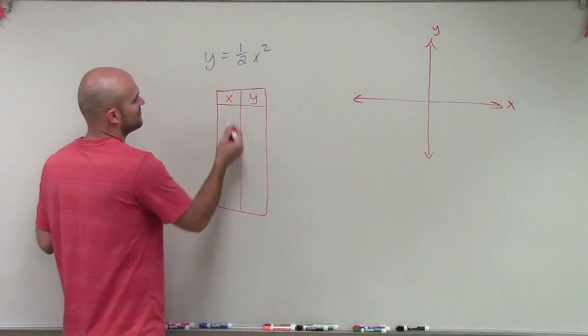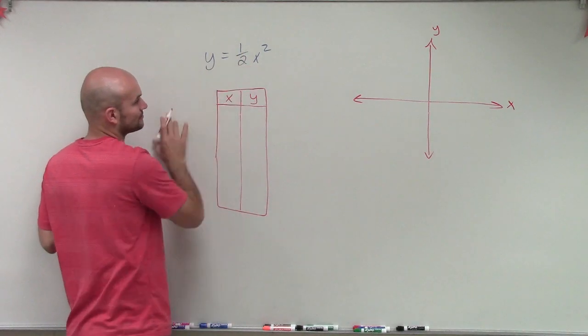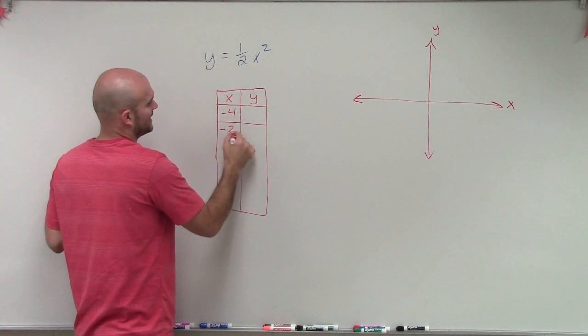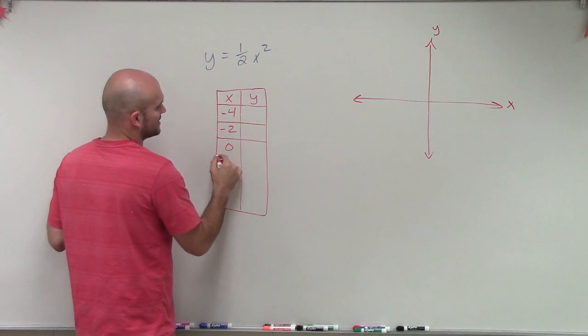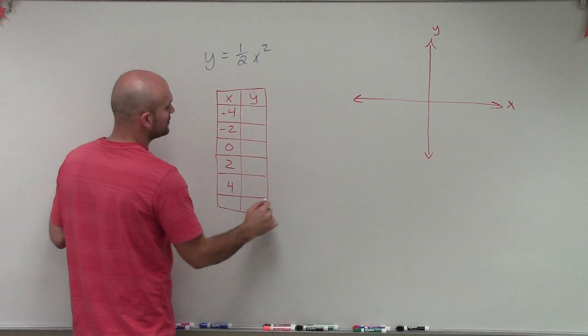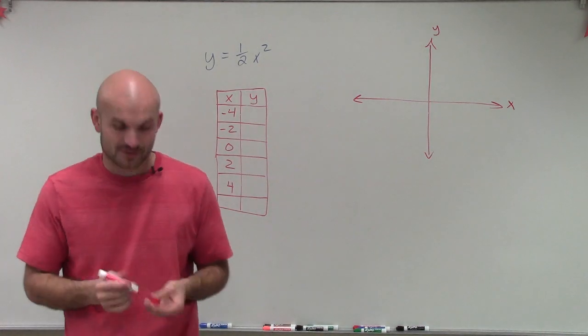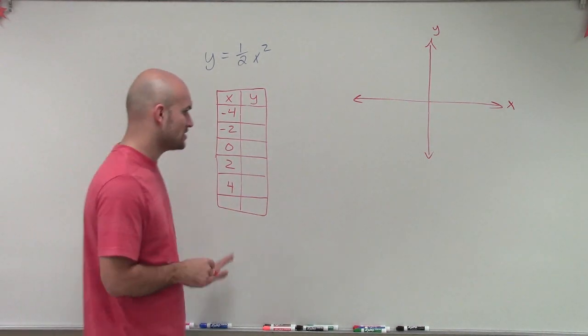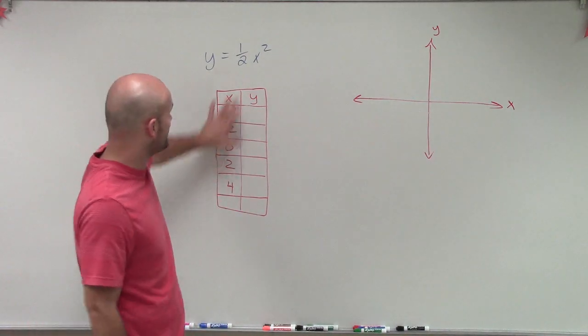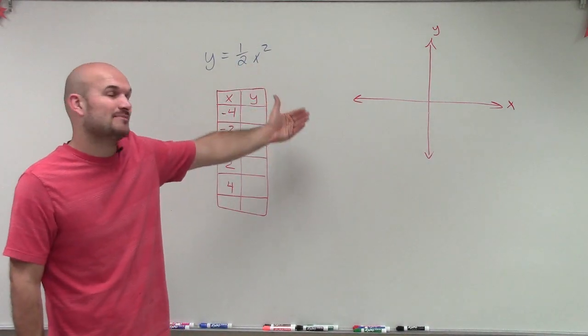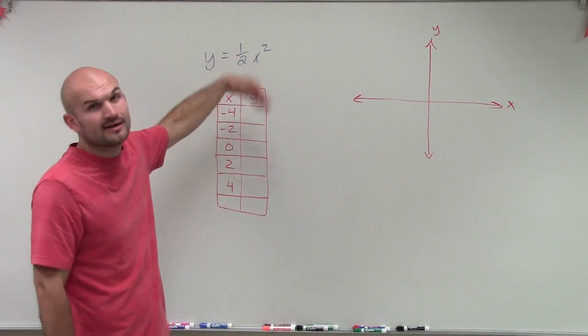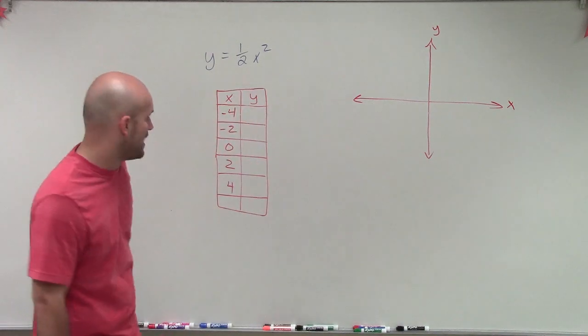But for right now, we're just going to use introductory values. And let's just do negative 4, negative 2, 0, 2, and 4. Now, you can choose any table of values that you want to for right now. But one thing that I notice is I know that when plugging them, I'm getting multiplied by 1 half. I don't really want to be dealing with fractions. So I chose some values that I'd make sure that once I have my term squared, it will be easy to multiply by 1 half.